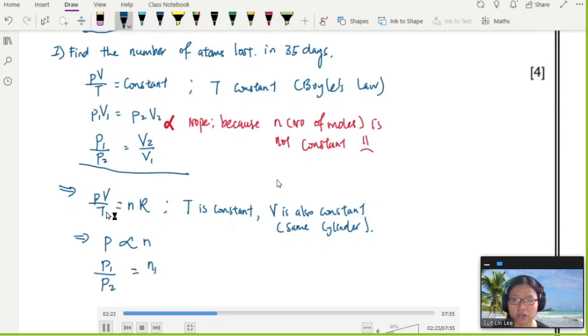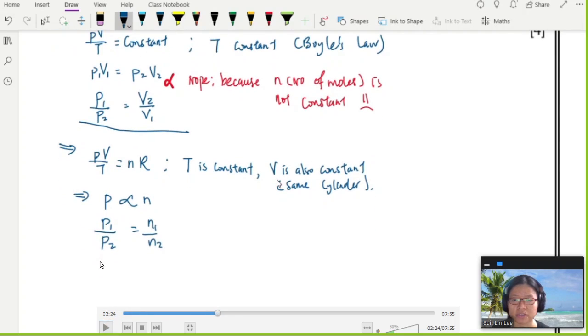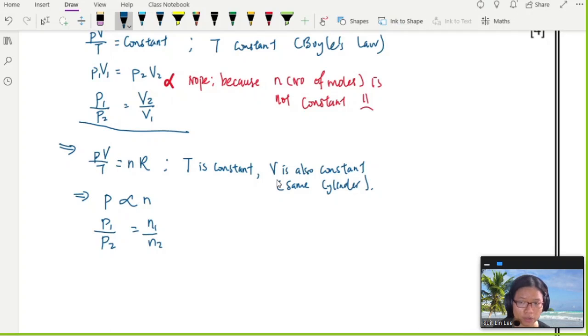From here, because all these things are constant - R is a gas constant, T is constant because it's told in the question, volume is also constant because it's the same cylinder - constant, constant, constant. What you have left is pressure. The pressure is proportional to the number of particles.